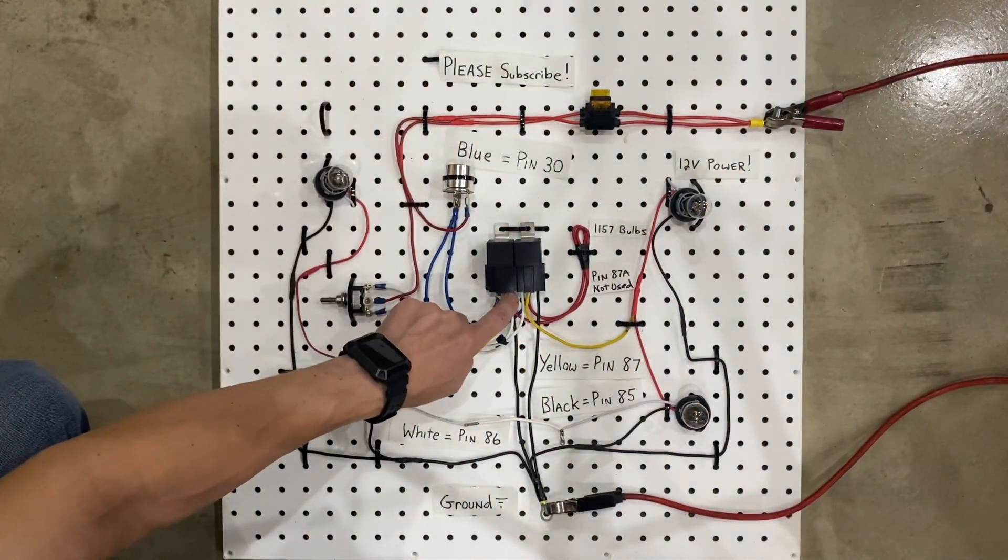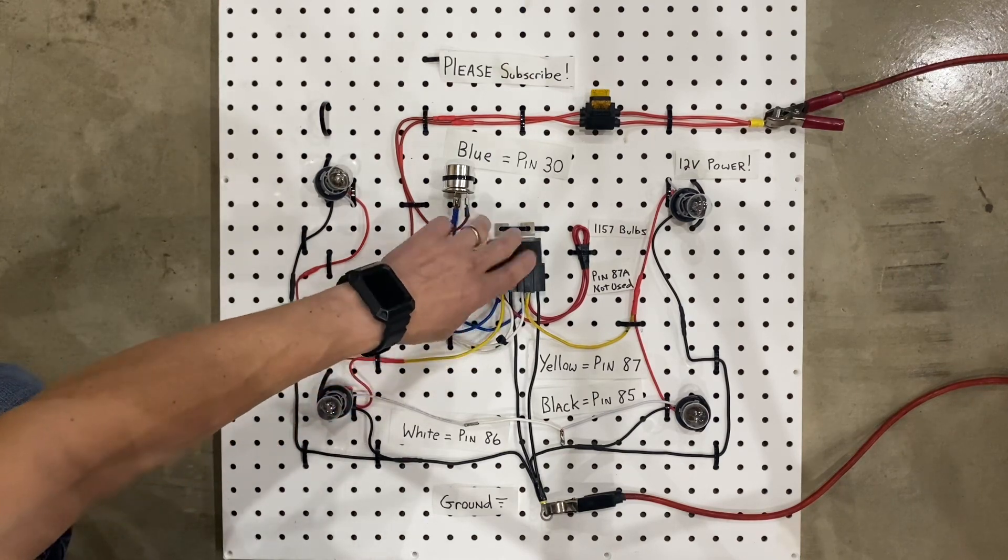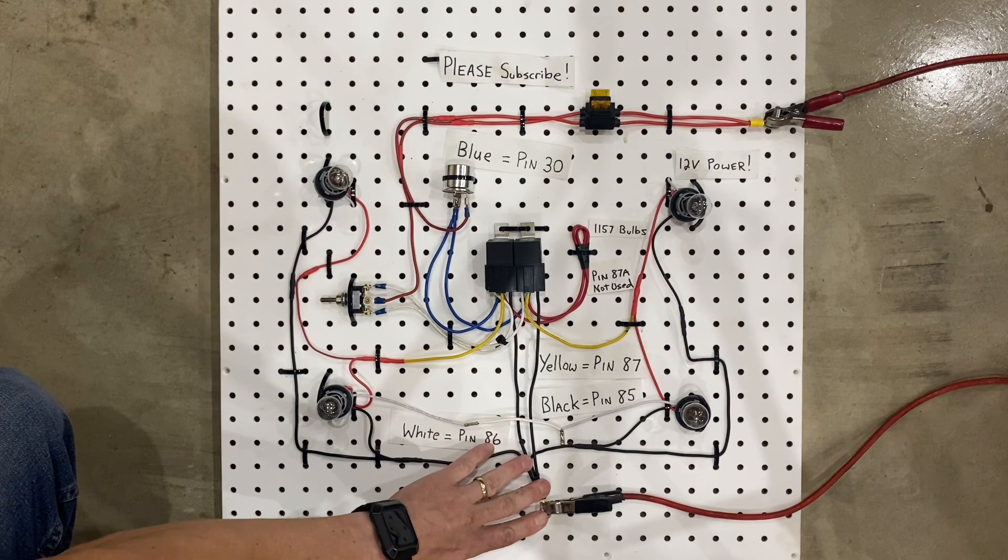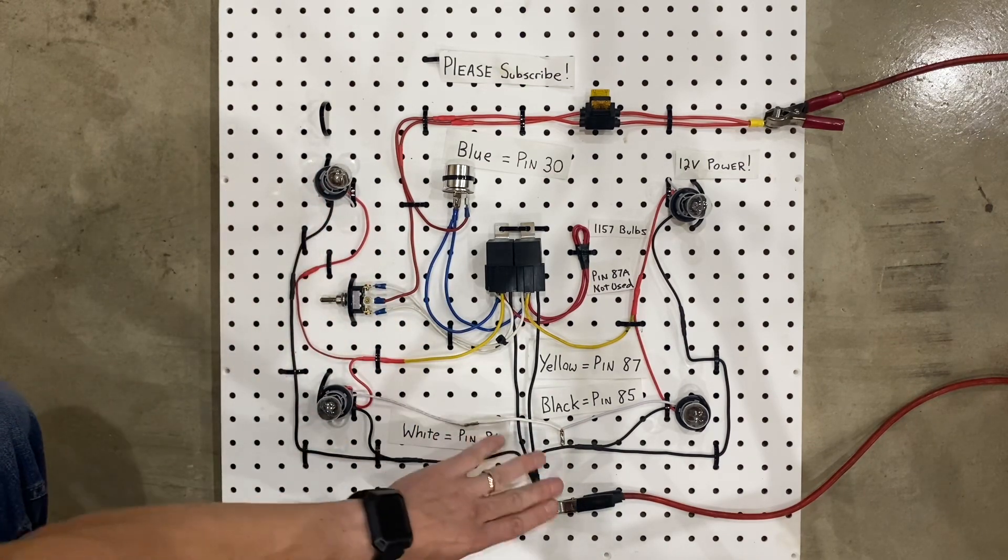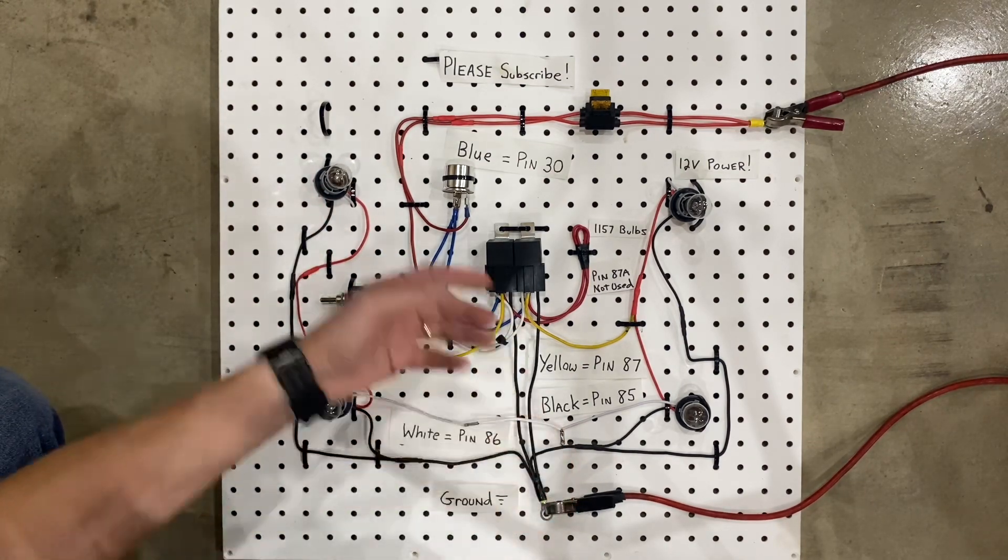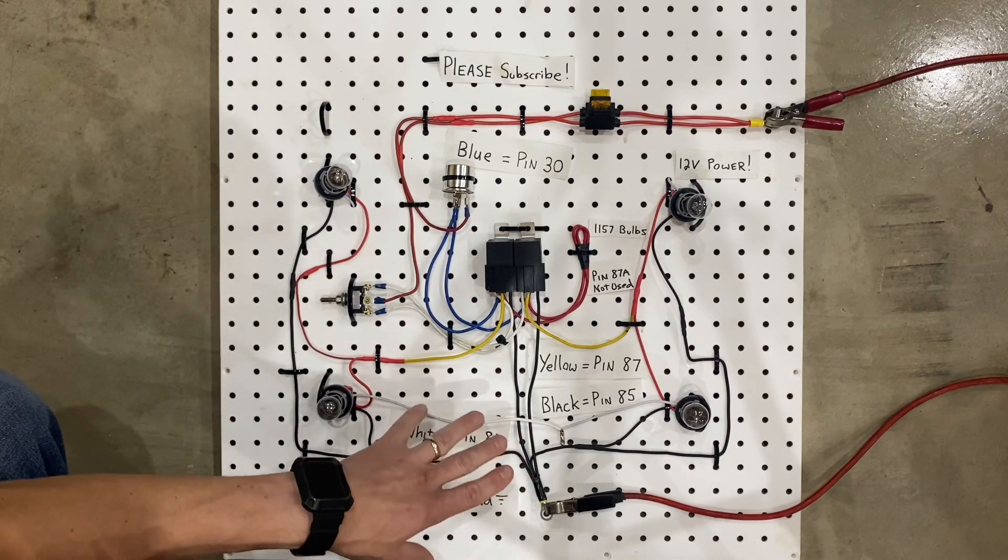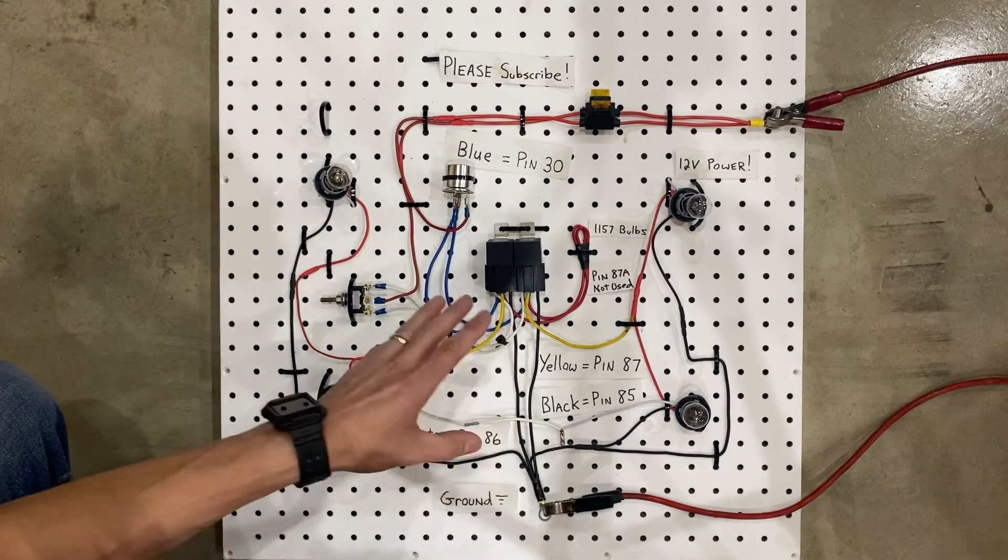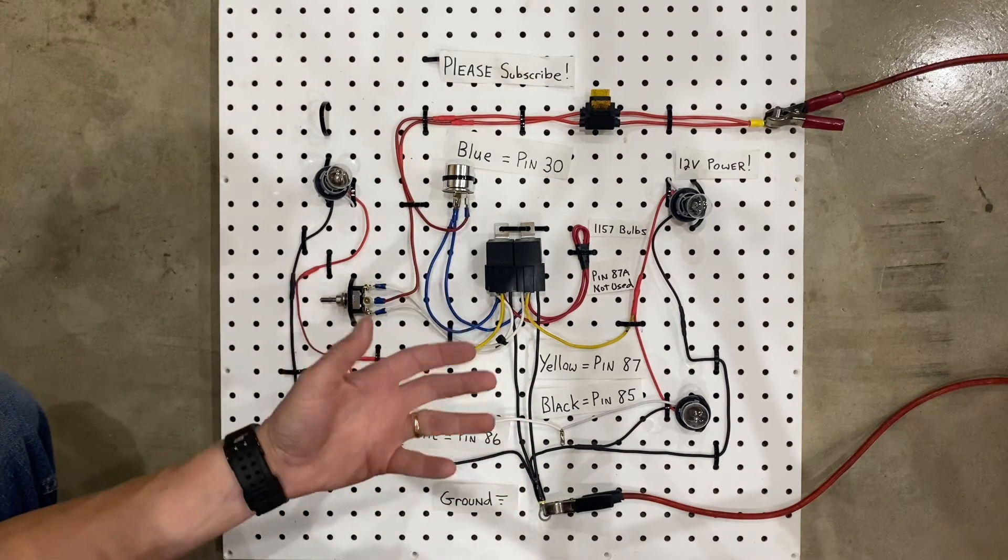The black wires on these relays are pin 85, and they just go to ground. And you'll notice I have all my grounds for my bulbs all meeting up in the same place. But if you want to ground those right to a chassis, that's totally fine, too. They don't all have to connect in the same place. They all just need to have a common ground, which is usually the chassis of a vehicle.